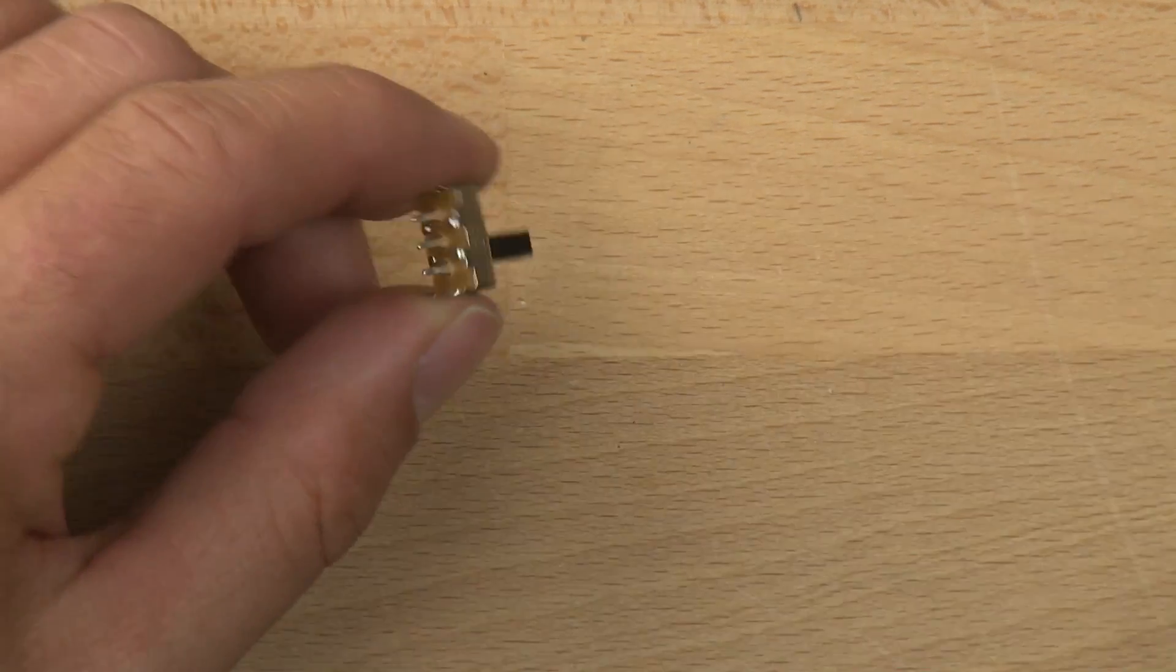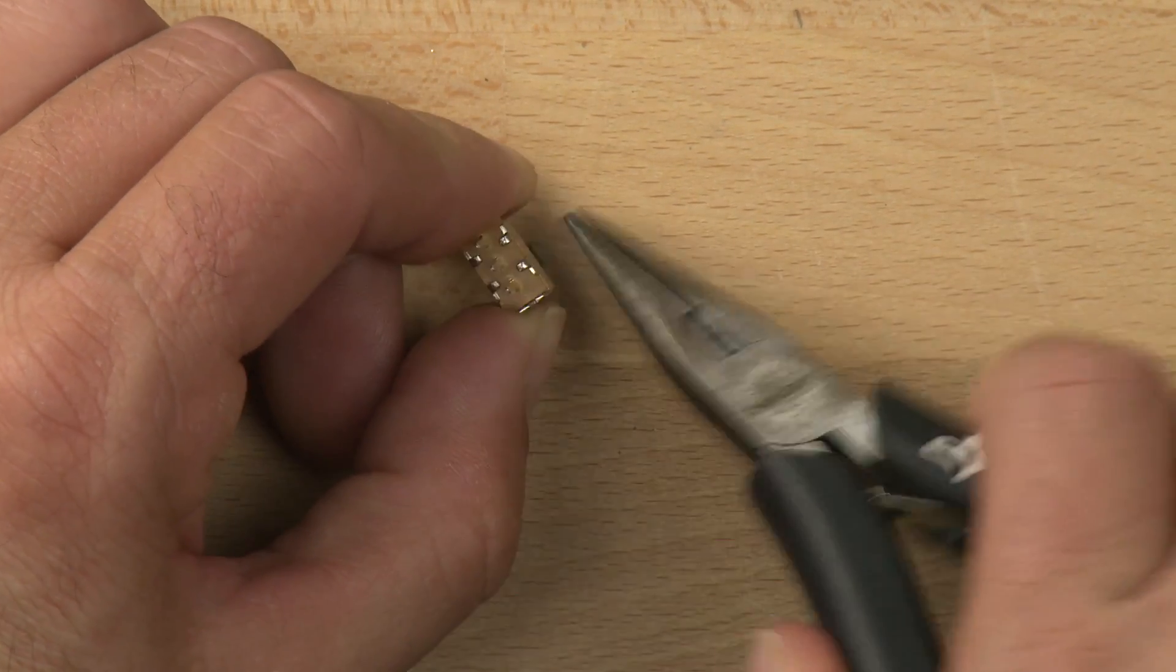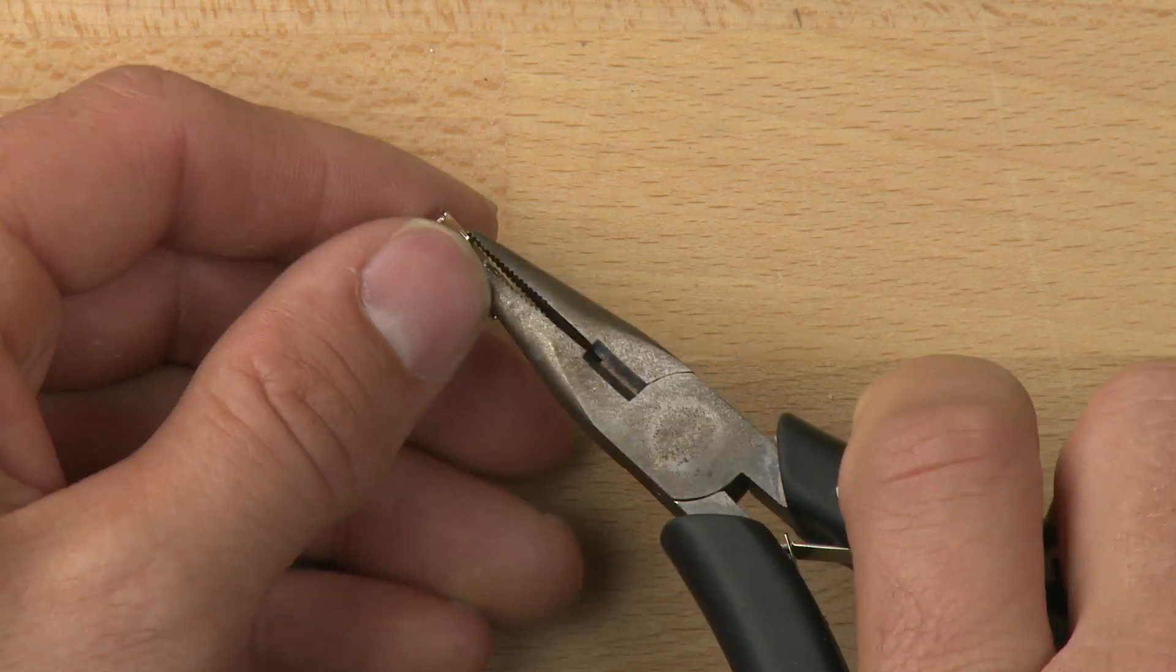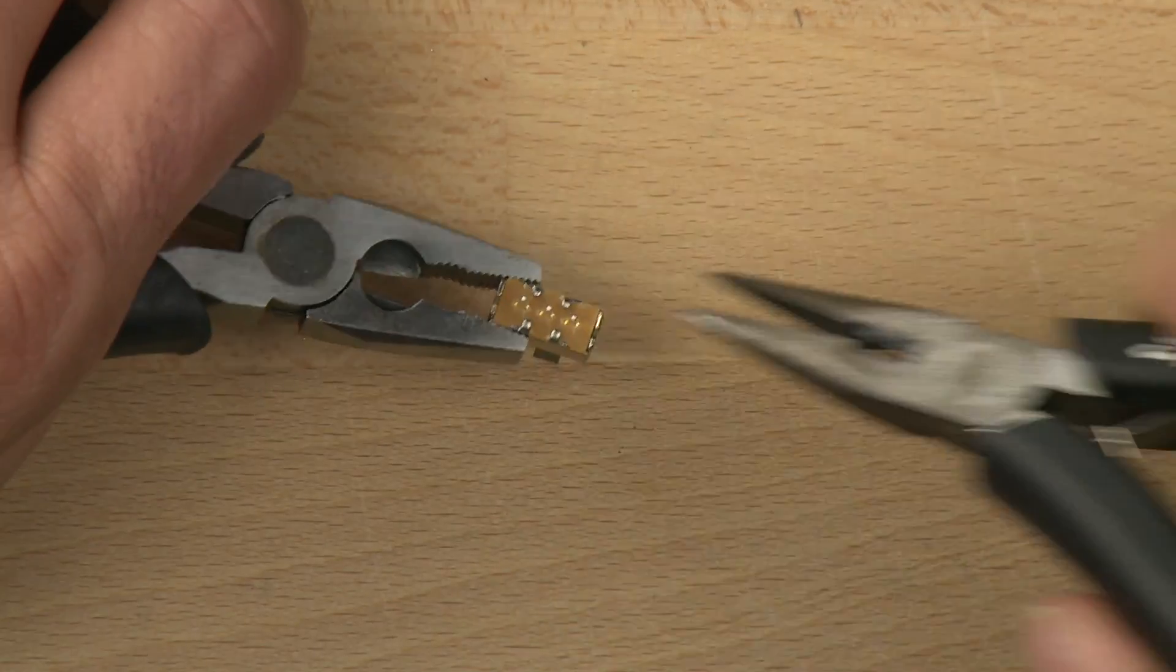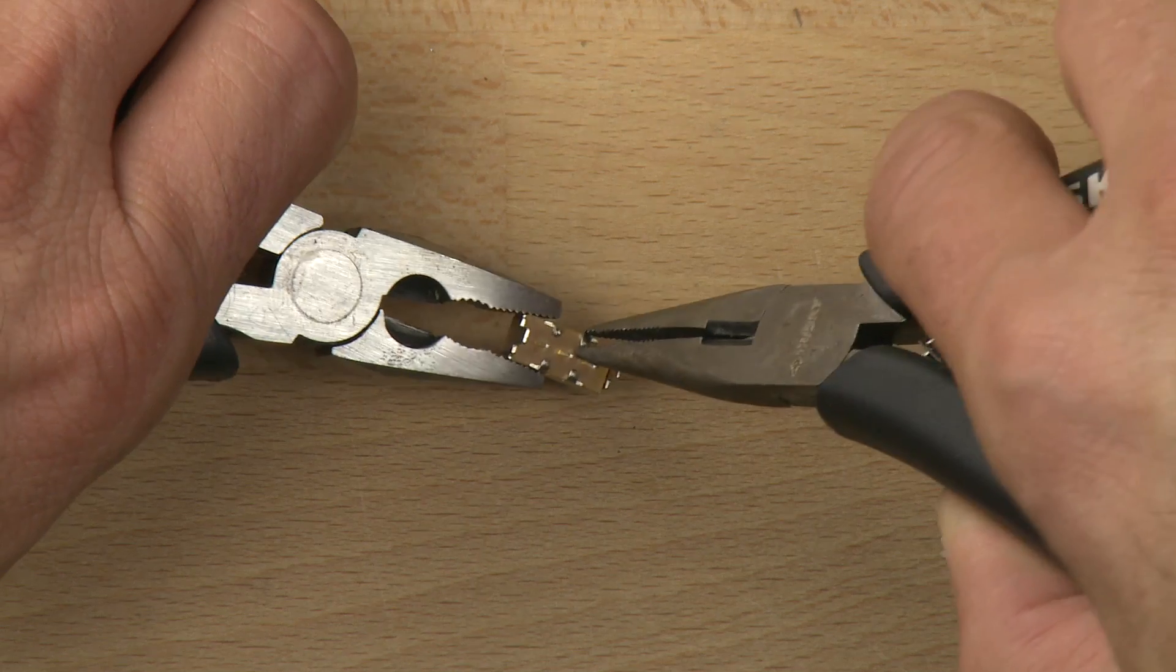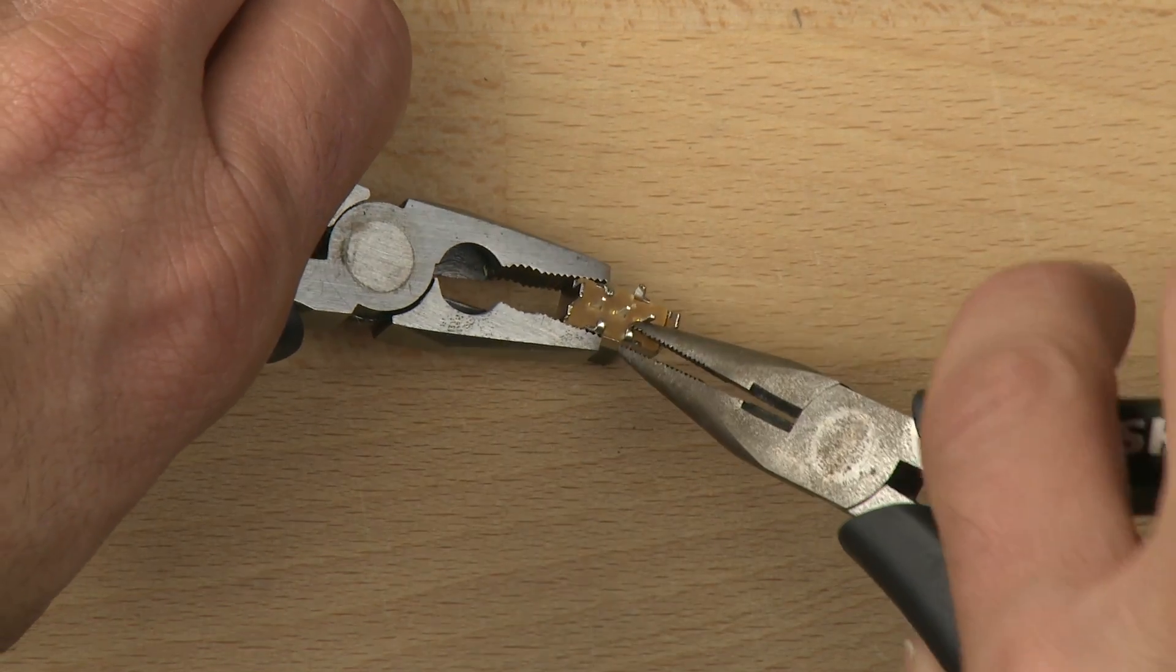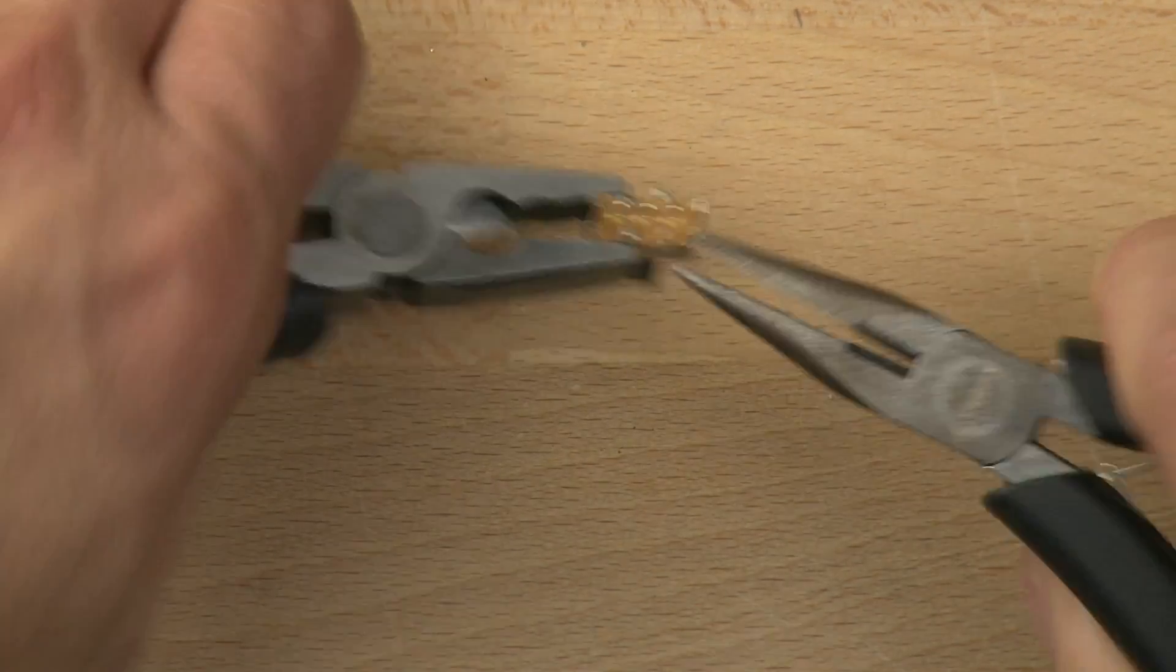So let's go ahead and take it apart. The first thing we need to do is these little tiny tabs here, we're going to bend those out of the way, and I'm going to use another pliers here because it's tricky to get inside of this and hold it. So we're just going to bend those little tabs out of the way. There we go.